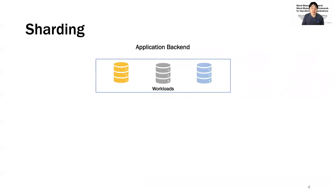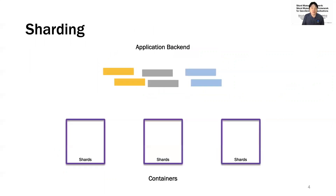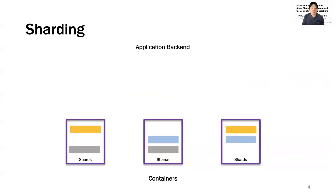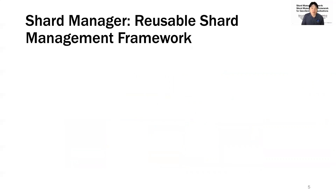Before we dive into Shard Manager, let's first look at the basic concept of sharding. Sharding is a common strategy to scale an application that deals with a large amount of state. At a high level, it partitions an application's work into smaller multiple shards and distributes them across different servers. Each shard may have multiple replicas for fault tolerance or performance, and can typically have at most one primary replica and an arbitrary number of secondary replicas. With the common usage of sharding, we built Shard Manager, a generic shard management framework that helps efficiently manage sharded services and avoid duplicate engineering efforts.